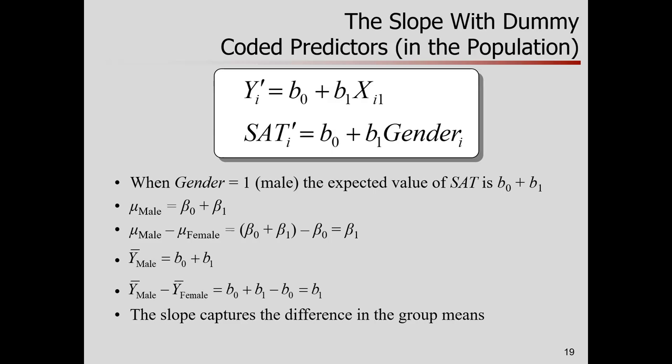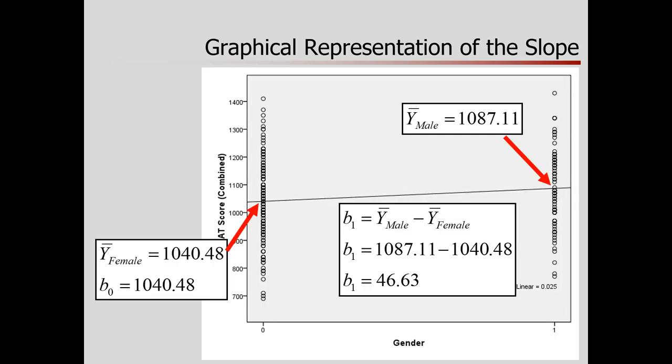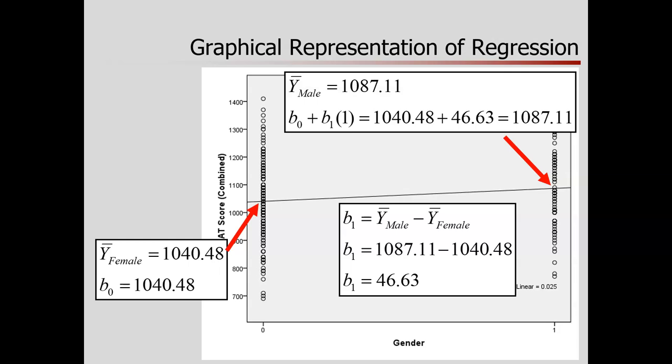The slope is literally the difference in the group's means, in the population and also in the sample. So the slope conveys the difference in group means. If I were just doing regular old descriptive statistics, okay, I got the mean for females, I got the mean for males, I could do the subtraction, it comes out to 46.63. When I go to fit this regression model, guess what the slope is going to be? 46.63. Really convenient to code things as zero and one, because then you have these very easy interpretations of the intercept and slope. The group mean for males, 1,087 is literally the intercept plus slope times the value of the predictor, that's one. Makes the math really easy.